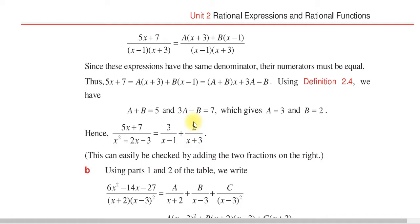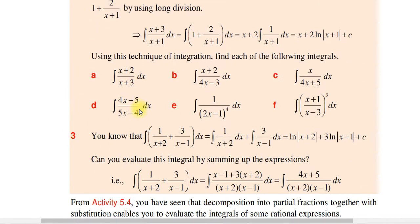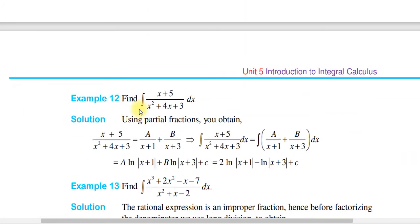Integration by partial fraction works the same way as decomposing a partial fraction. For example, find the integration of (x plus 5) over (x² plus 4x plus 3) dx. This is the same as the quadratic form. Using partial fractions, you obtain (x plus 5) over (x² plus 4x plus 3) equal to A over (x plus 1) plus B over (x plus 3).